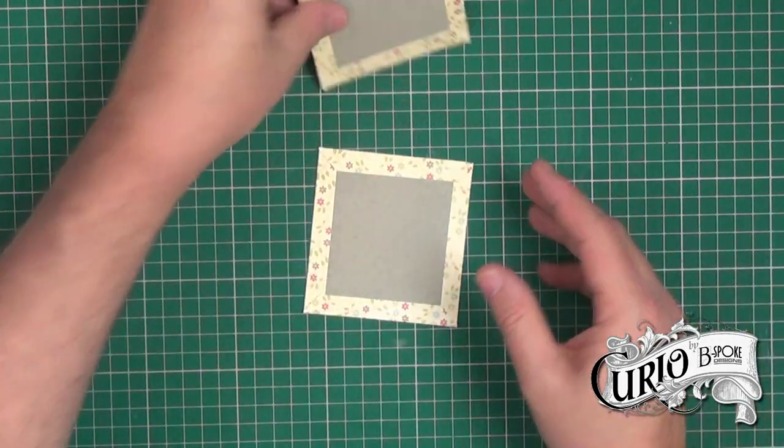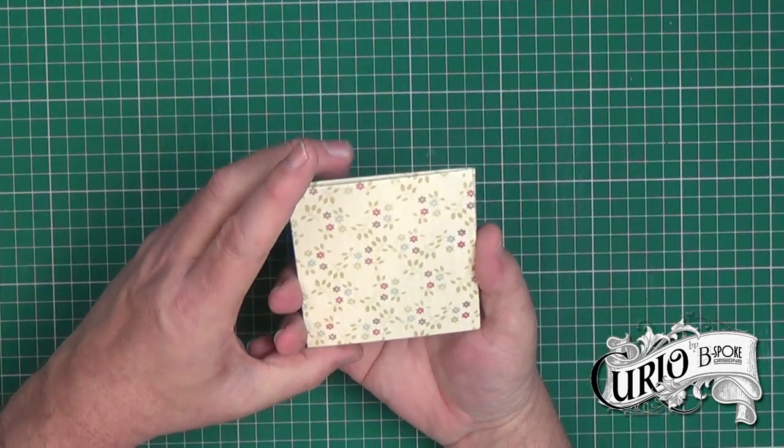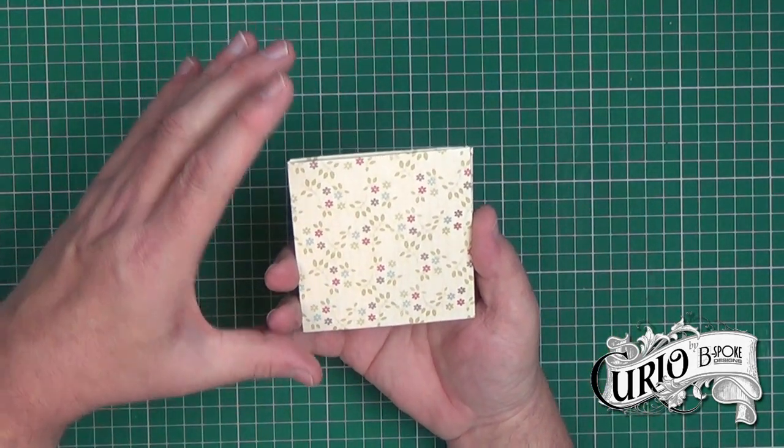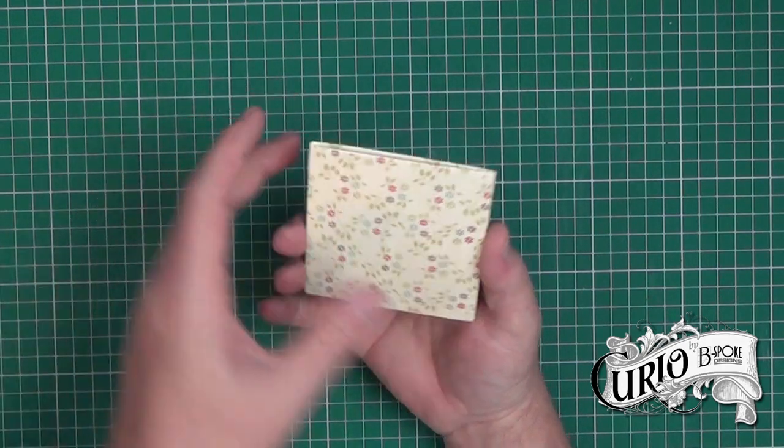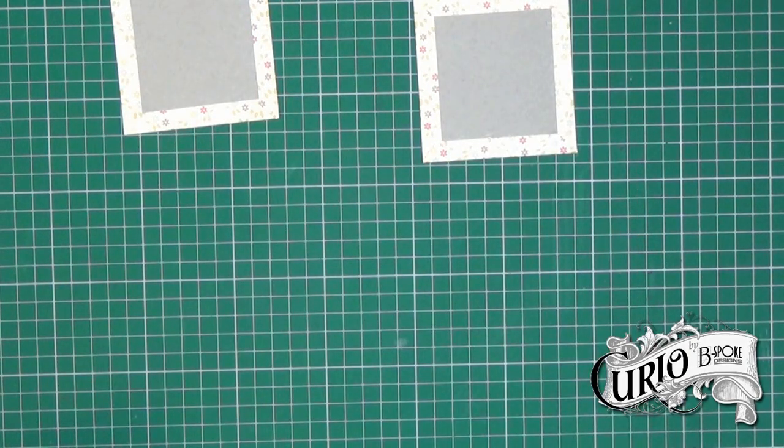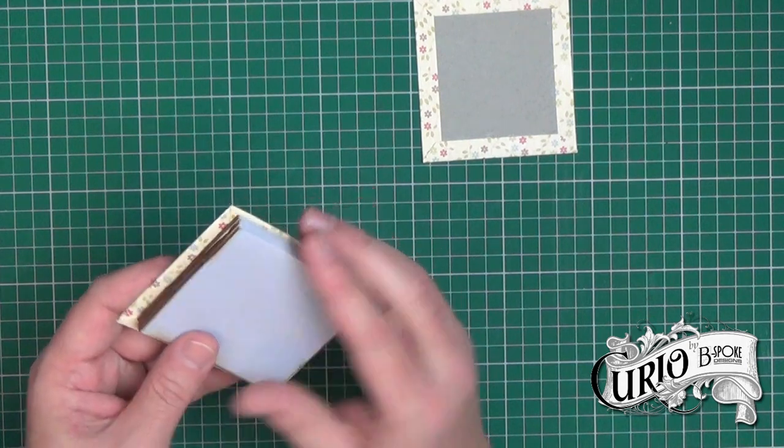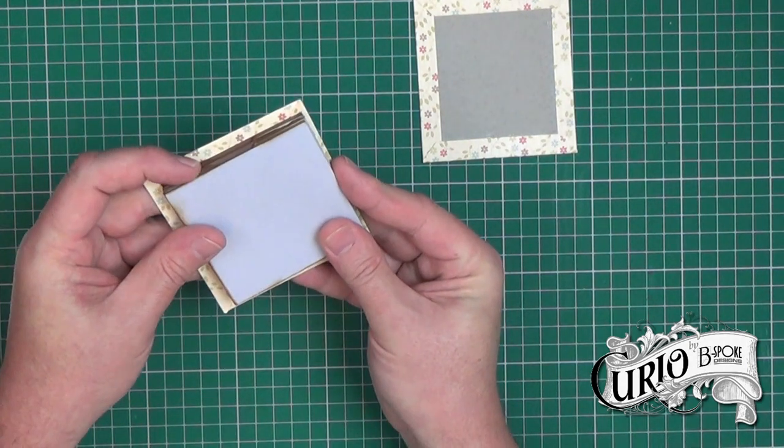And there we have our covers. It's important to make sure that the longest side is the top and the bottom of the shortest side to the sides. I'm just going to check that against the book to make sure that it looks okay and it does.